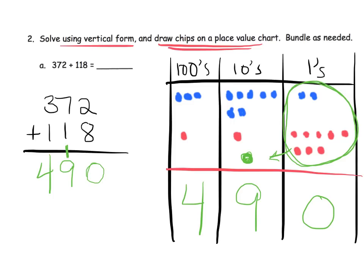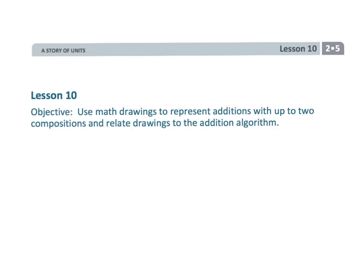So teachers and parents, some students are ready to go straight to the vertical method. Let them. Other students need to do the place value chart first. At this stage in the game, let students choose which one they want to do first and which one they want to do second. Ultimately, everybody is going to do this first. But at this stage of the game, we let the students choose. And that wraps up this short one. That was grade 2, module 5, lesson 10.